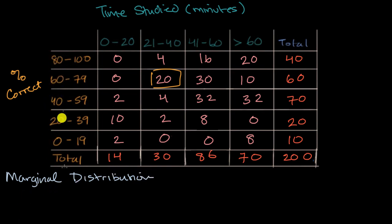So for example, if you wanted to figure out the marginal distribution of the percent correct, what you could do is look at the total of these rows. So these counts right over here give you the marginal distribution of the percent correct. 40 out of the 200 got between 80 and 100, 60 out of the 200 got between 60 and 79, and so on and so forth.